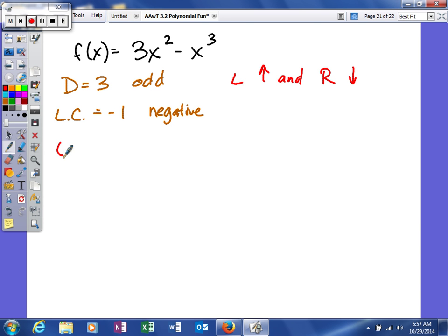Next, what we're going to try to do is find the zeros of our function. So we're going to set it equal to zero, and I'm going to factor out the common factor. Not only am I going to factor out the common factor of x squared, but I'm going to factor out the negative x squared and rewrite it so that it's in descending order.